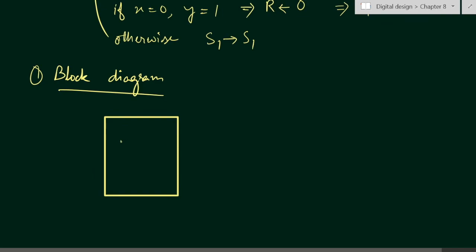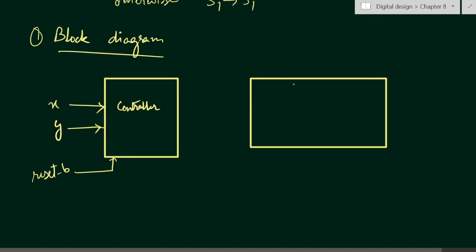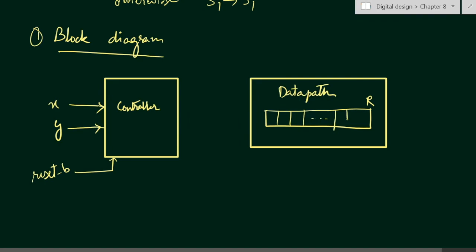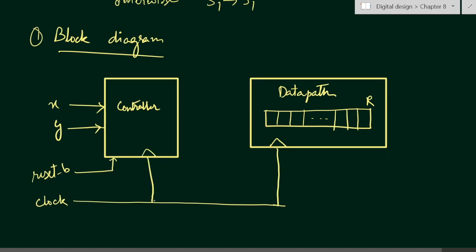Let us draw the block diagram. We have a controller unit with control inputs x and y, and one active low synchronous reset signal reset_b. There is also a data path block containing register r, and a synchronous clock signal applied to both the data path and the controller.